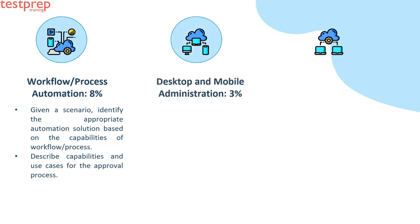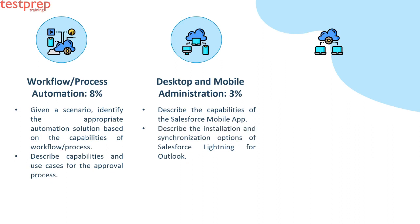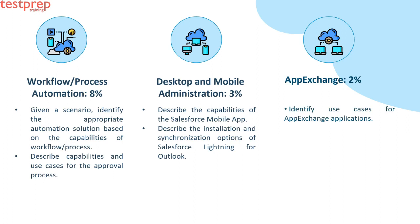Desktop and Mobile Administration, 3%: First, describe the capabilities of the Salesforce mobile app. Second, describe the installation and synchronization options of Salesforce Lightning for Outlook. AppExchange, 2%: Identify use cases for AppExchange applications.